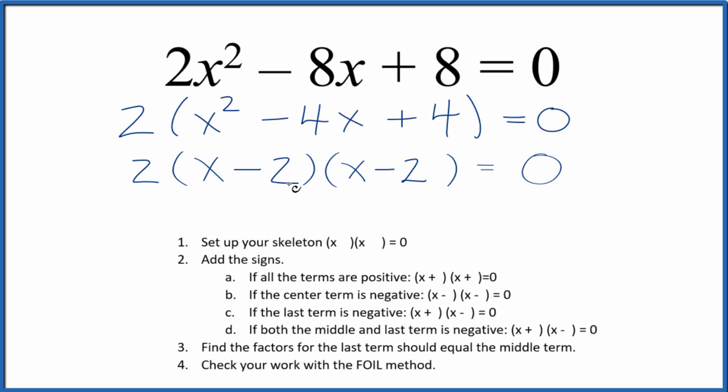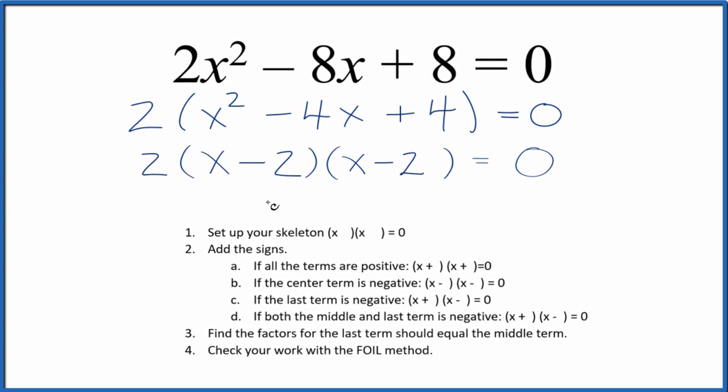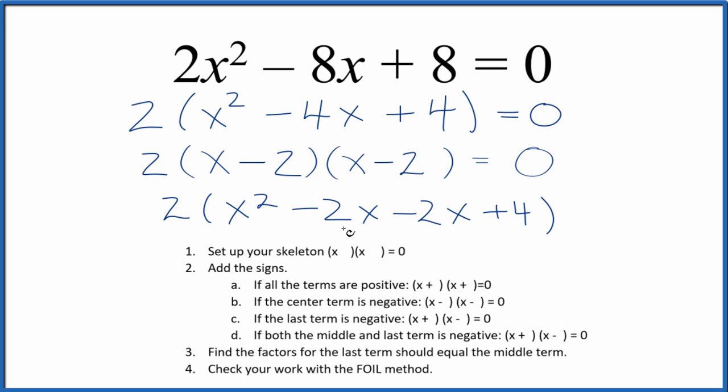If we check this with the FOIL method, we multiply the first, the outside, the inside, and the last terms. If we combine the negative 2x and the negative 2x, that's negative 4x. X squared minus 4x plus 4. That's what we had right here.